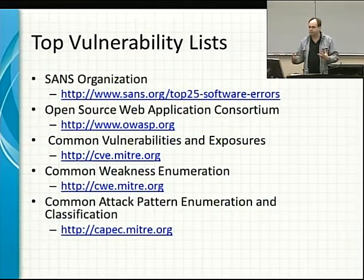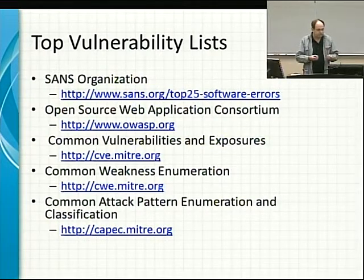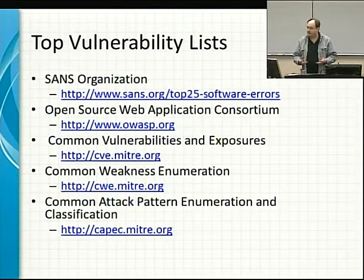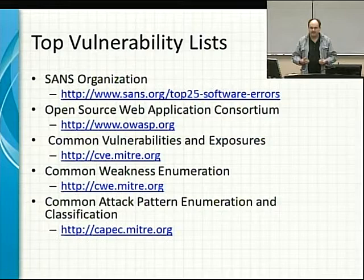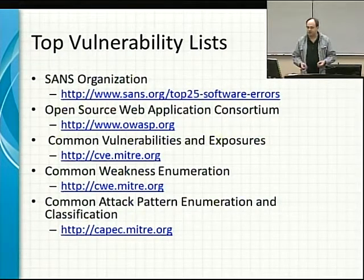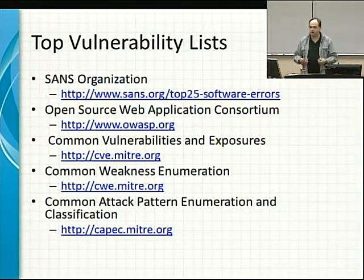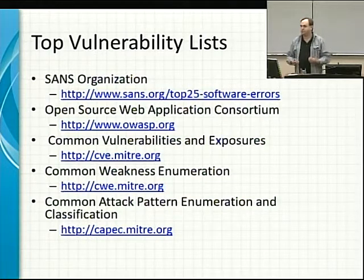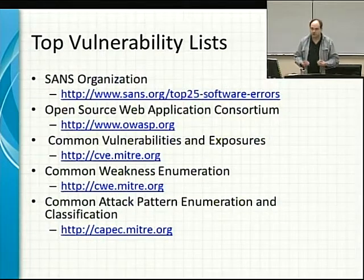Applications that have vulnerabilities get reported to this organization. They classify them based on the common weakness or the common vulnerabilities, document that information and put it out there so that others can learn from it. They tell you what the vulnerability was, how it occurred, and how you can fix it. There's also Common Attack Pattern Enumeration and Classification, also at MITRE, which is sponsored to maintain a lot of these databases.